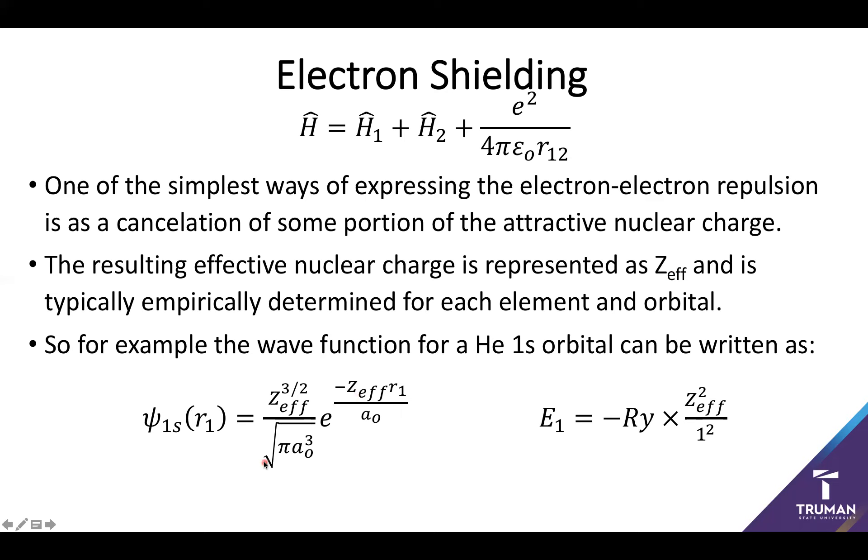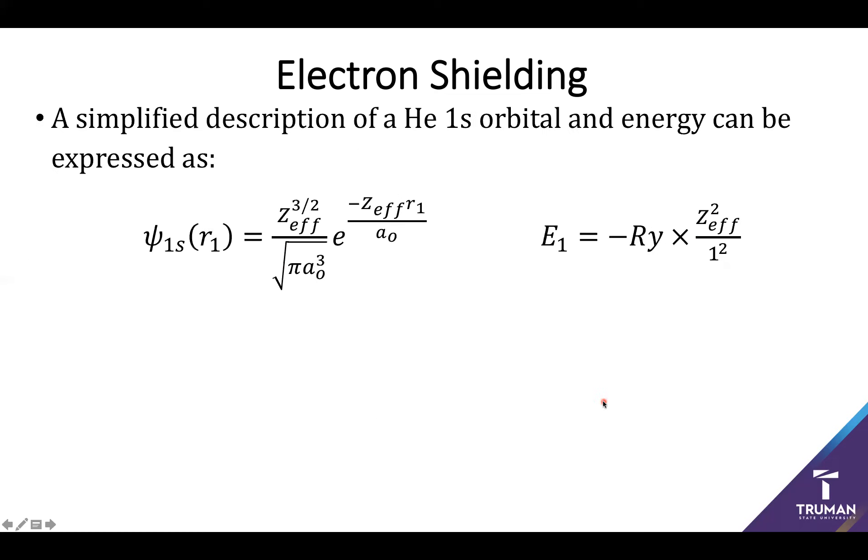And so using this we can imagine applying our Hamiltonians and we get a new energy. And this energy is more or less going to be our classic Rydberg energy, but instead of times Z squared, it's going to be times Z effective squared. And again, over N, 1s electron, so that's 1 squared.